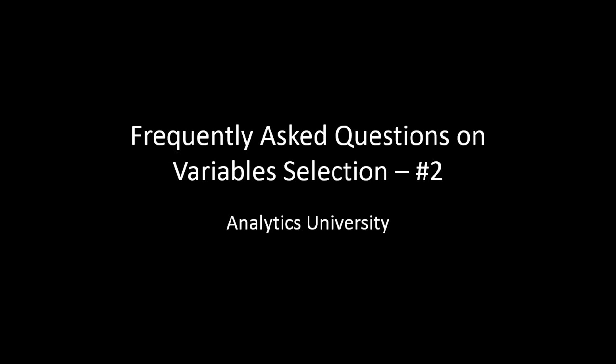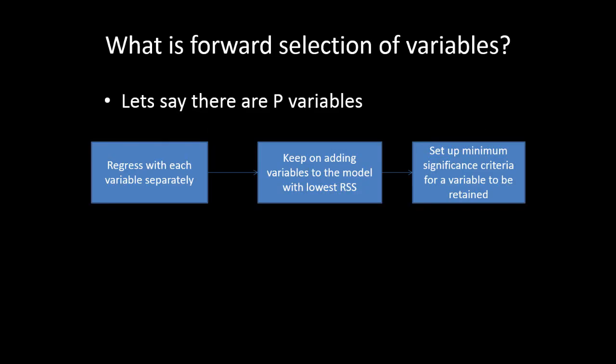In this video, I am going to talk about a few more frequently asked questions on variable selection. The first question that is often asked is: what is forward selection of variables? This is a very popular way of selecting variables in regression models.